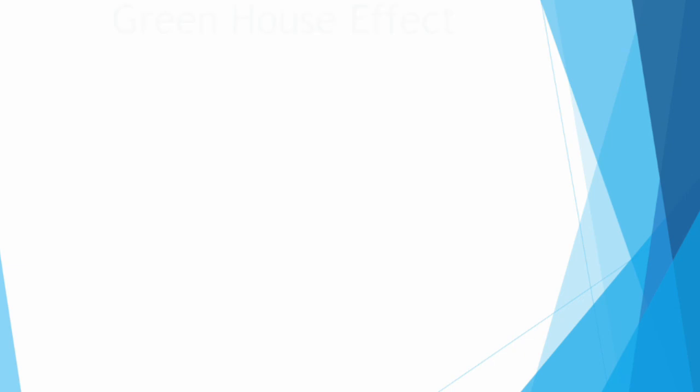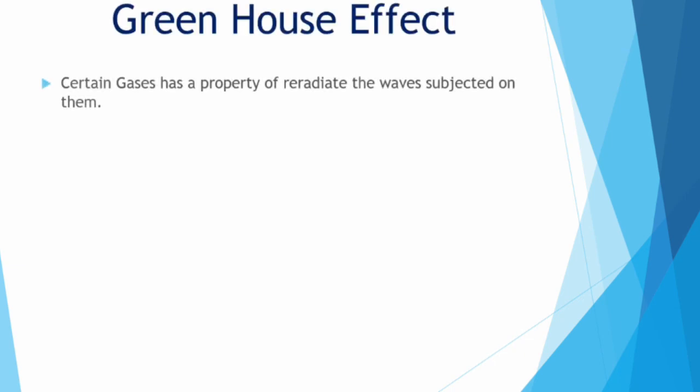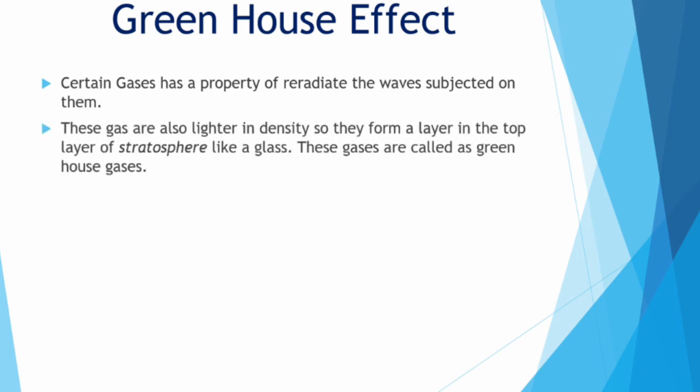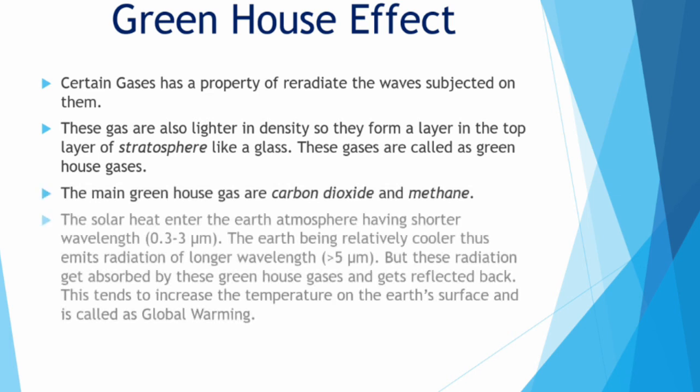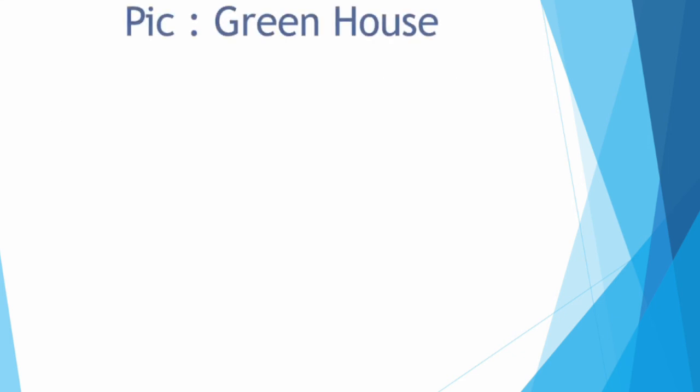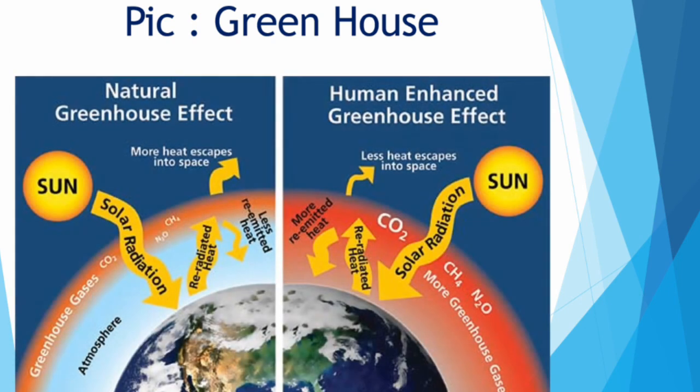What is greenhouse effect? The solar radiation reaching the earth's surface from the sun is reflected back to the earth's atmosphere. But due to the greenhouse gases which are lighter in density forming a top layer of the stratosphere like glass, these heat radiation or the electromagnetic waves are re-radiated back to the earth's surface causing the earth's surface to have a higher temperature. The greenhouse effect helps in maintaining the earth's temperature but the increased effect of greenhouse can cause global warming.